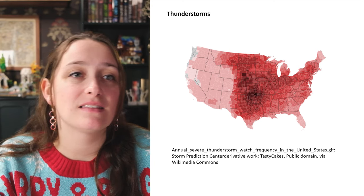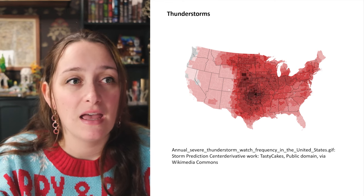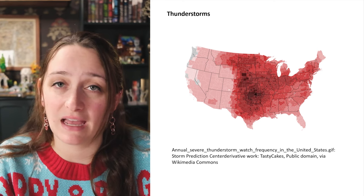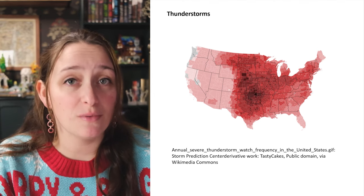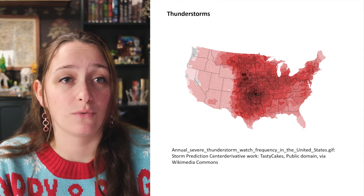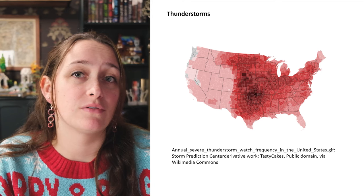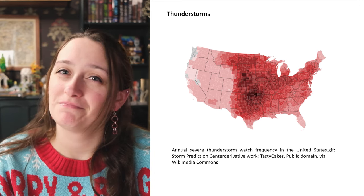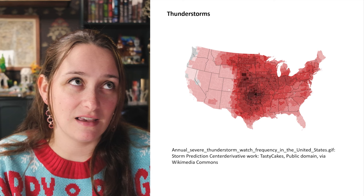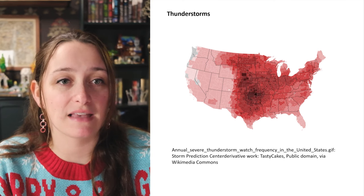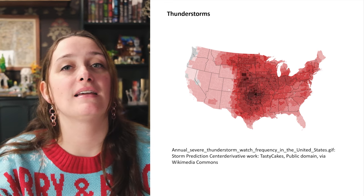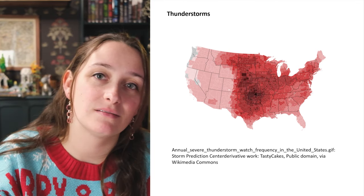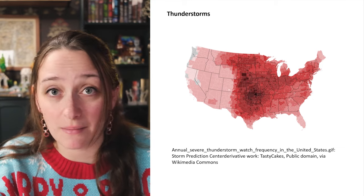Multi-cell thunderstorms mostly form along warm or cold fronts and can last much longer, covering huge areas. Supercell thunderstorms are very large, last for hours, are rare, but can produce large hail and even tornadoes. The big fuel for all of these is convection — large land masses that heat up during the day create convection. This is why thunderstorms are pretty unlikely out at sea, since the sea doesn't warm at the same rate as land.